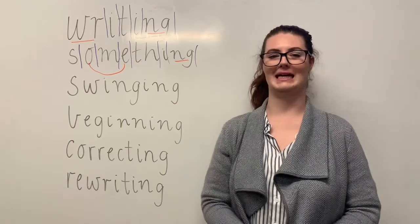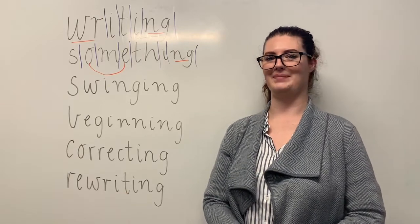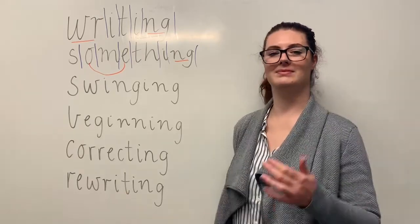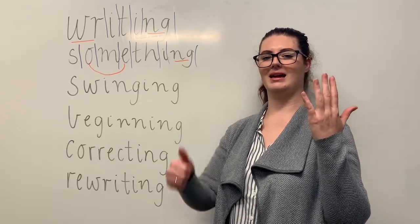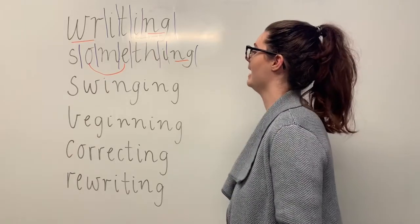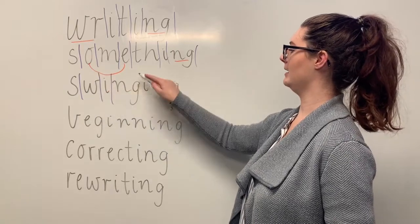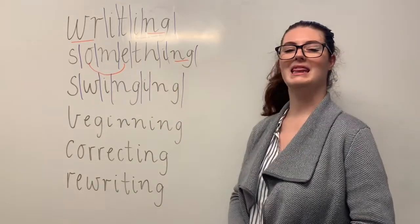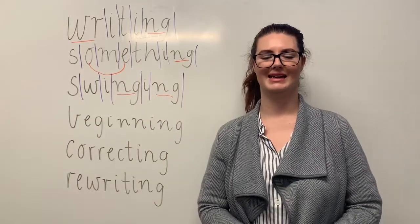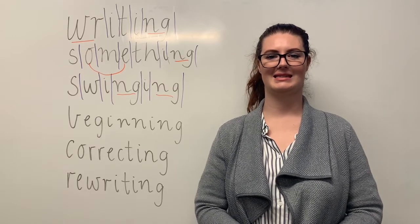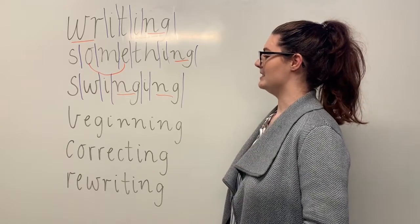Our next word is swinging. Say swinging. I love swinging on the swing really high and seeing how far I can get. The sounds in swinging are together: s-w-i-n-g-i-n-g. The letters in swinging are s-w-i-n-g-i-n-g. The parts that we need to remember are the NG diagraph making the N sound. Can you teach it to me? Swinging. S-w-i-n-g-i-n-g.